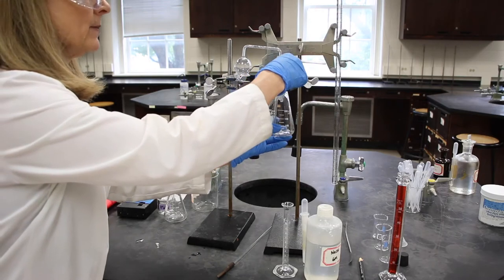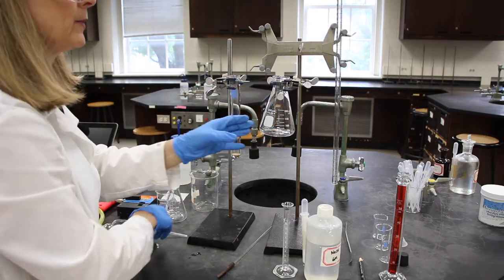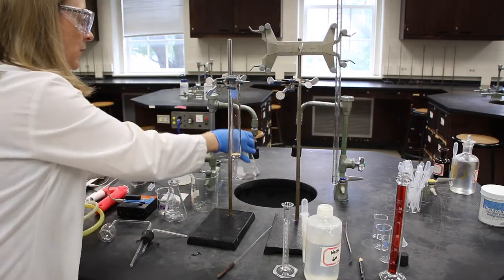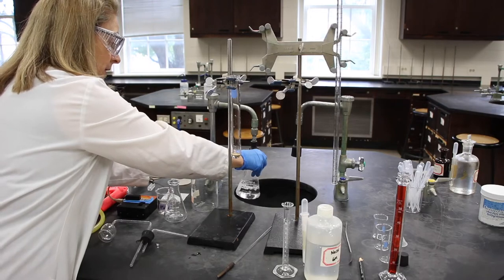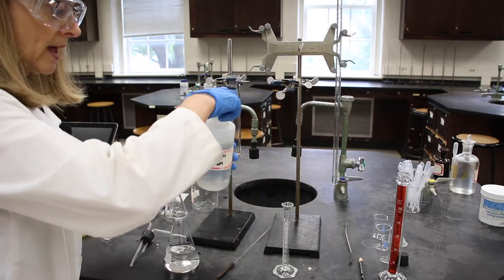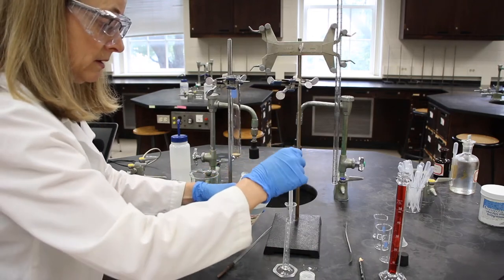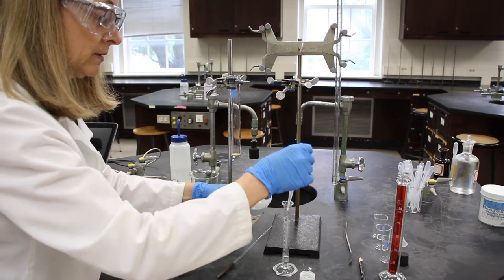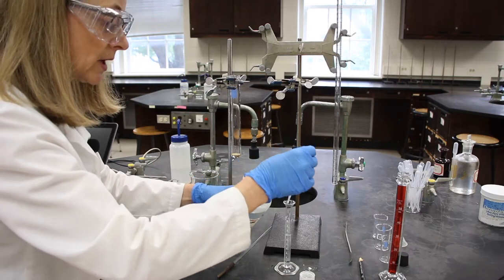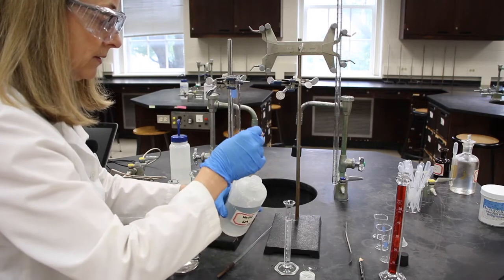Now I need to assemble my gas trap. So I'm going to take off my hood apparatus and I'm going to add about 150 milliliters, the amount is not terribly important, of tap water to our Erlenmeyer flask. And I'll add about 10 milliliters of sodium hydroxide to this Erlenmeyer flask also. The sodium hydroxide will neutralize any toxic gases that are formed.